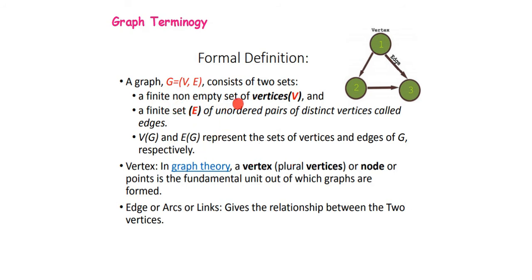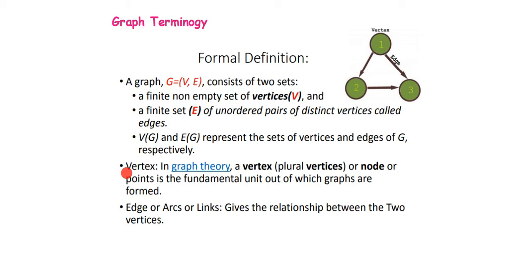For a non-empty set of vertices V and a finite set of unordered distinct vertices called edges, V(G) and E(G) represent the set of vertices and edges of a graph respectively. This is how you represent the vertex set V(G) and edge set E(G) of a graph.